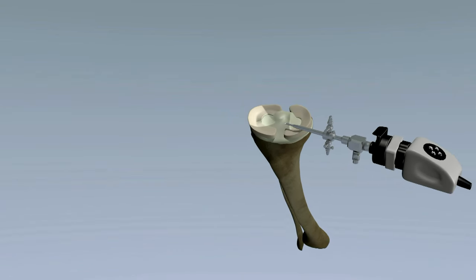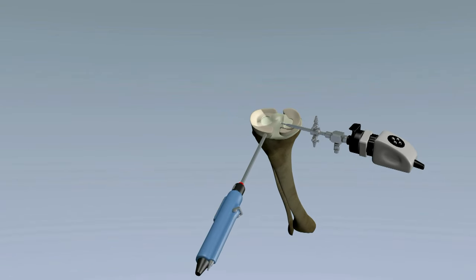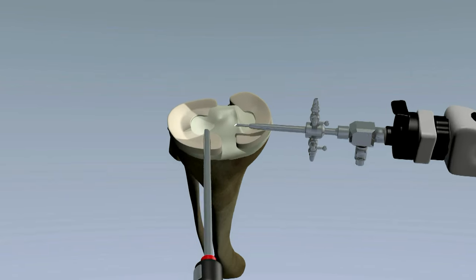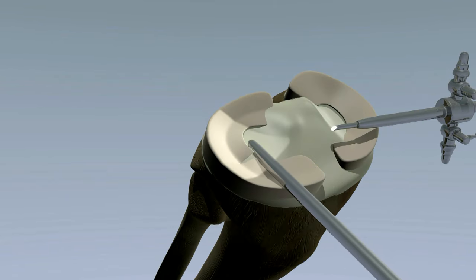When a meniscus tear is not repairable, the torn portion of the meniscus is shaved away. This results in a smoother edge that does not catch or cause pain.